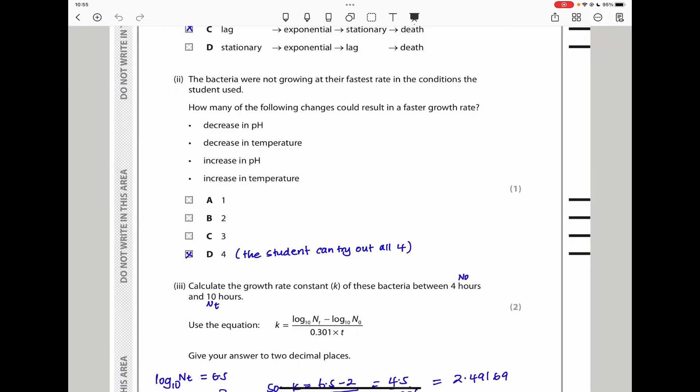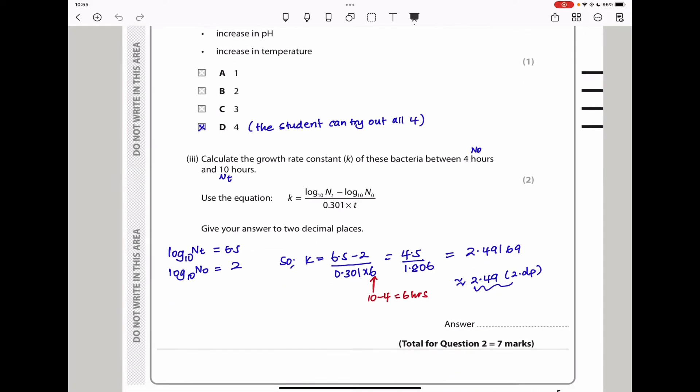The next part they say, the bacteria were not growing at their fastest rate in the conditions the student used. How many of the following changes could result in a faster growth rate? A faster growth rate requires changing conditions. It means we need to alter the conditions and find out which conditions are going to be better. So decreasing pH could work, decreasing temperature could work, and increasing pH could work or increasing temperature. So all these four are potential factors that could be considered. So four of them should be tried out.